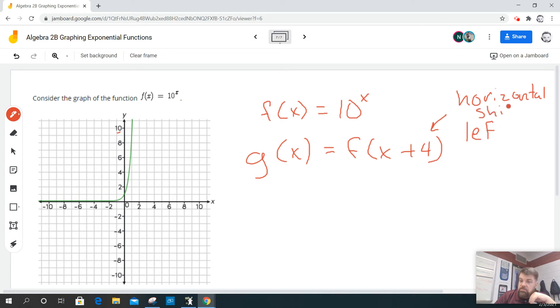Now, if that was a negative 4, it would go to the right 4 units. Okay.